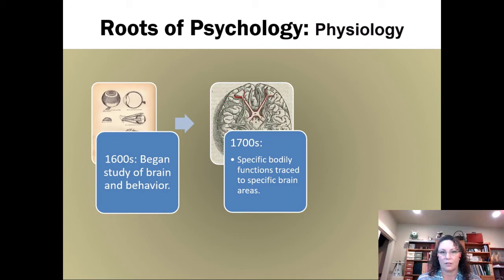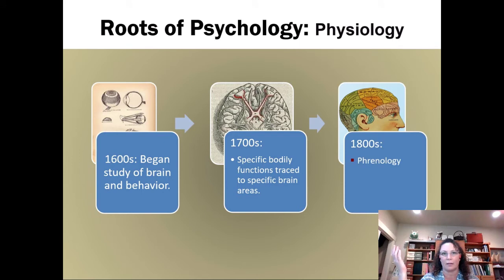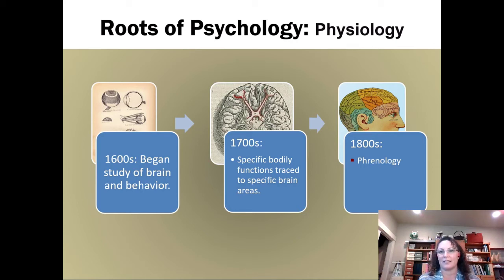By the 1700s, doctors had started to figure out certain areas of the brain that govern certain bodily functions—what part of your brain processed vision, what part processed hearing, what part governed heart rate. So they were really starting to narrow it down. By the 1800s, a new field called phrenology came on the scene. It was a very pseudoscientific field, but it was asking questions that psychologists are still trying to figure out. If you zoom in on that phrenological map on the right-hand side, you see regions of the head that the phrenologist thought drove certain behaviors.